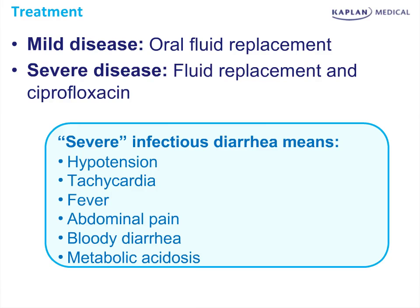Severe disease basically means you are hypotensive and tachycardic, have a fever, abdominal pain, blood in the stool, and metabolic acidosis — because the colon is a bicarbonate-secreting organ. When you have severe infectious diarrhea, this is when you give antibiotics. You don't need every single one of these findings, but two or three minimum. Just tachycardia alone, or just fever, or just abdominal pain is not enough. When the picture is clear, the answer is ciprofloxacin or fluoroquinolone.